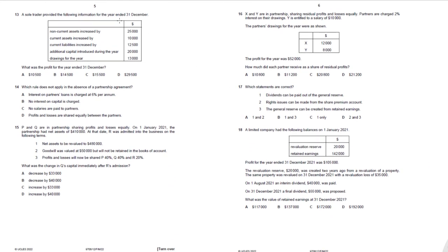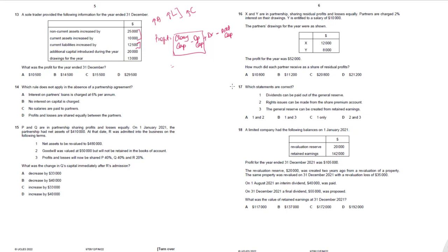A sole trader provided the following information: non-current assets increased by $25,000, current assets increased by $10,000, current liabilities increased by $12,500. Profit formula: closing capital minus opening capital plus drawings minus additional capital. The increase in capital equals increase in assets minus increase in liabilities: $35,000 − $12,500 = $22,500. Adding drawings of $13,000 and subtracting additional capital of $20,000 gives the profit figure.